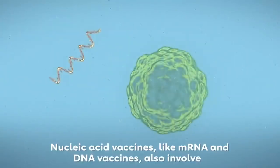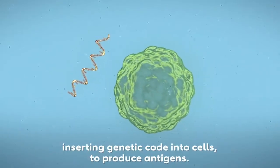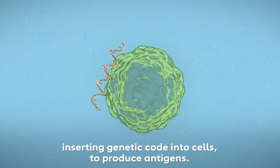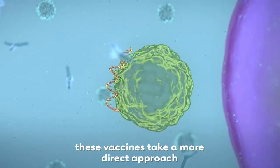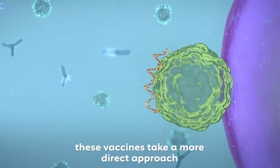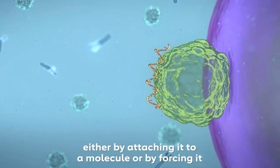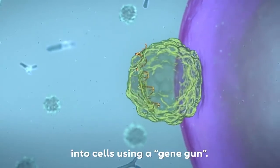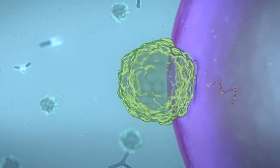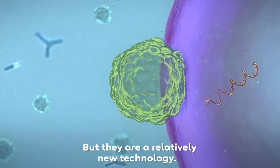Nucleic acid vaccines, like mRNA and DNA vaccines, also involve inserting genetic code into cells to produce antigens. But instead of using viruses to deliver the code, these vaccines take a more direct approach that involves inserting the code directly into cells, either by attaching it to a molecule, or by forcing it into cells using a gene gun. These vaccines can be quick and cheap to develop, but they are a relatively new technology.